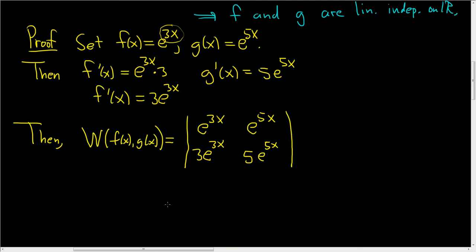And then we just take the determinant. So we multiply these guys, so we're going to get 5, and when you multiply e to the 3x times e to the 5x, you add the exponents, so we get e to the 8x. Then we subtract, and then again we multiply, so we have 3, and then again we add the 5x and the 3x, so we get e to the 8x. So 5 minus 3 is 2, so we get 2 e to the 8x.